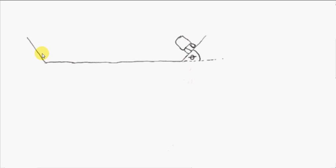Here we have a cross section of a circular track with an embankment. The embankment is at an angle of theta degrees to the horizontal. Here we have a snapshot of the car at a particular instant of its motion.